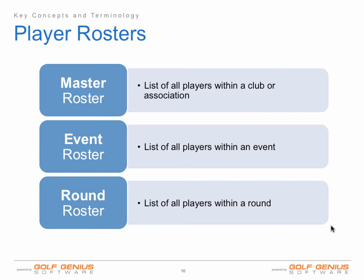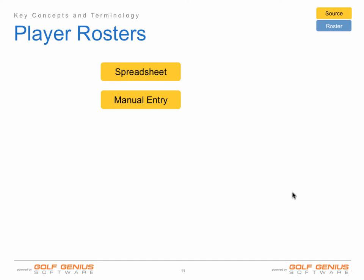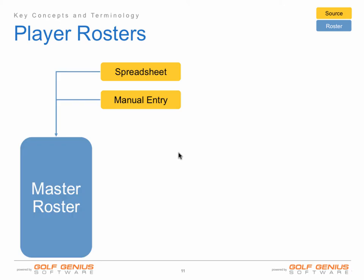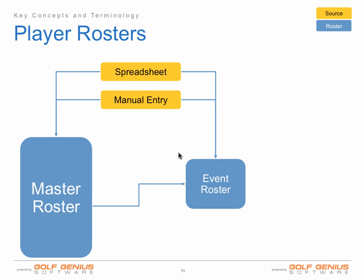In a lot of cases, the event roster is the same as the round roster. If there are 40 players playing an event in a two-round event, it's likely that all 40 players are playing in both rounds. However, in the case of leagues, each week there may be different players in the league roster playing in each round each week. As you can see, there are a couple of different sources that your players can come from. You could have a spreadsheet of players, or you could go into our software and manually enter players one by one. You can use both of these methods to import your master roster. You can also import an event roster using a spreadsheet of players or manual entry. Or, as you'll see this arrow going from the master roster to the event roster, you can import players from the master roster to your event roster as well.